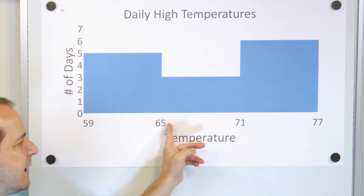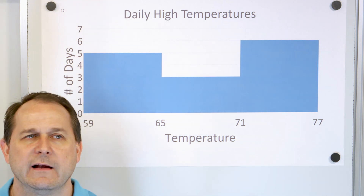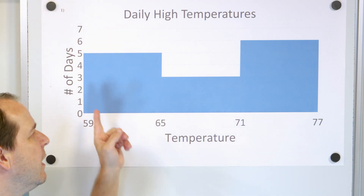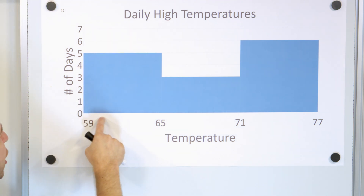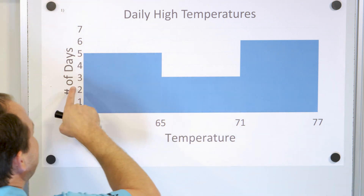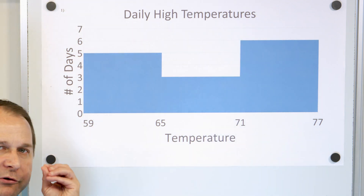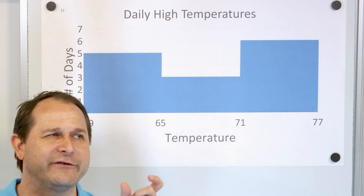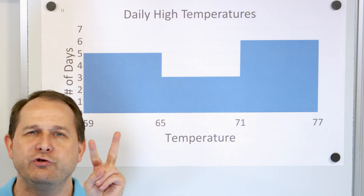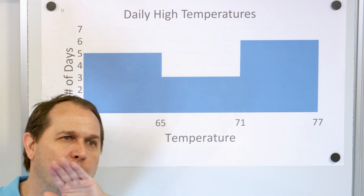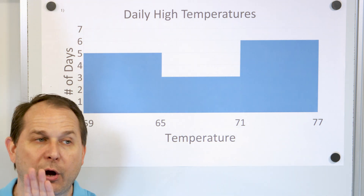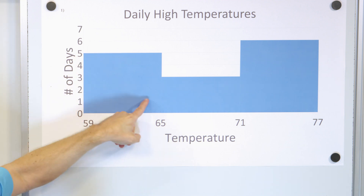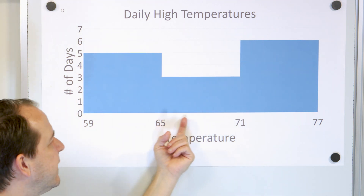Secondly, in a bar chart, along the bottom there are usually words or categories. Like a bar chart might show favorite colors — red, blue, green — on the bottom, and how many people like that color going up. So for a bar chart, along the bottom we usually have words, not numbers. Those are the two main differences: in a bar chart we have words along the bottom and the bars are separated, whereas in a histogram the bars are connected with no space between them, and along the bottom we have numbers.